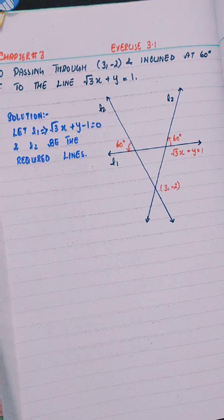Part 2 is passing through (3, -2) and inclined at 60 degrees to the line √3x + y = 1.